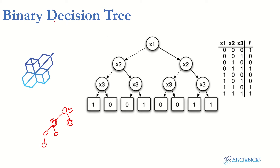In a decision tree, each node represents a decision — in most cases true or false. If we have only two decisions, we have a binary tree: following a true decision goes into one branch, following the other decision goes into another branch. Later we will see the general setup of decision trees where we can have multiple decisions and branches, so the tree is no longer binary.